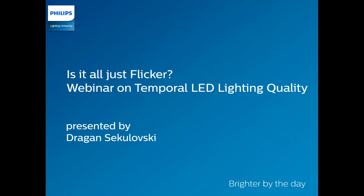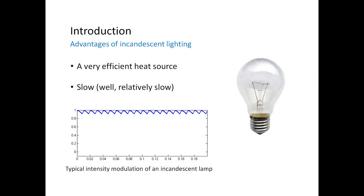Thanks for joining us to discuss flicker and in general temporal light LED lighting quality. Before I discuss that, I want to start with something we haven't discussed in a long time — some advantages of incandescent lighting. We all know they are a very efficient heat source but give out only a bit of light. Another advantage we don't talk about often is that incandescent lighting is relatively slow — it reacts very slowly to changes in driving current. So if you put an incandescent bulb on AC mains, instead of seeing the full modulation of the AC mains, you see something with only a small amount of modulation.